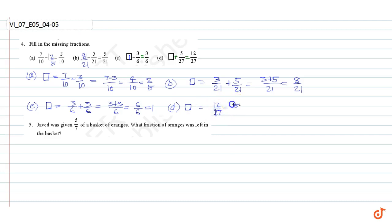Part D: missing fraction equal to 12 by 27 minus 5 by 27 equal to 12 minus 5 by 27. It is equal to 7 by 27. So here it is 7 by 27.